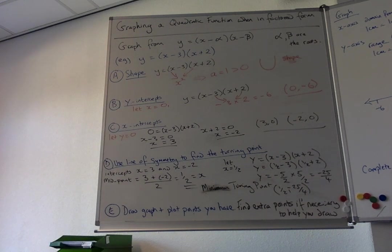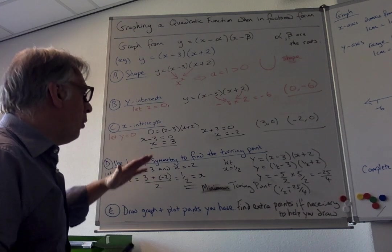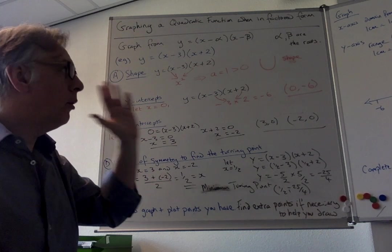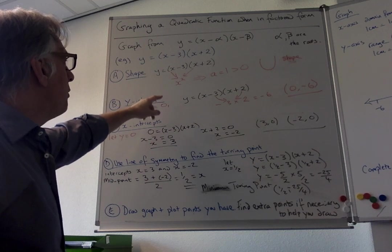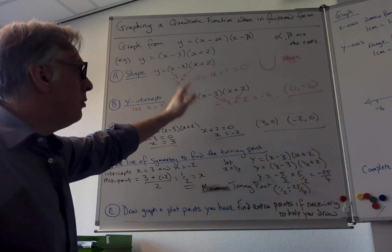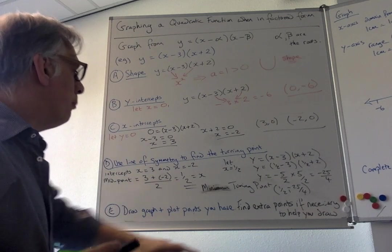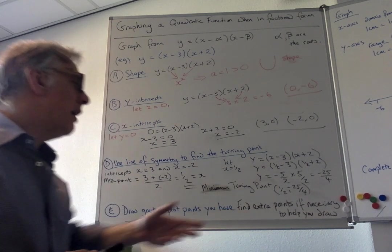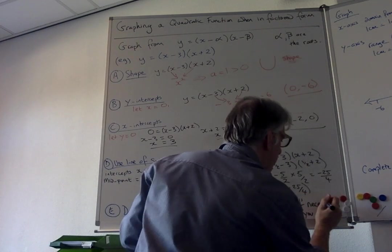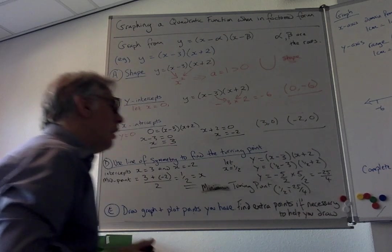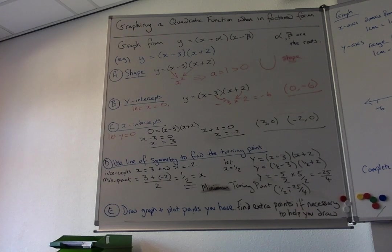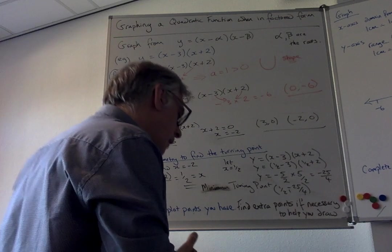Now we've got all the bits we need. Take the points and put them on the graph. Use the line of symmetry to reflect the y-intercept and get its partner. If you still want extra points, start picking some values of x, plot a point, and use symmetry to get a second point for free.